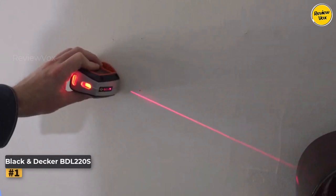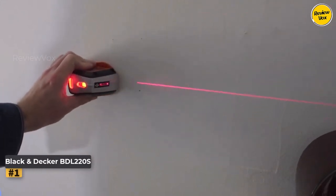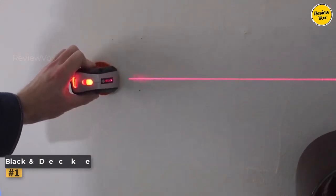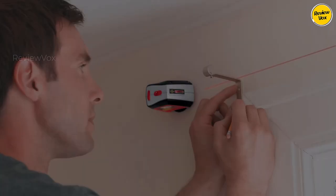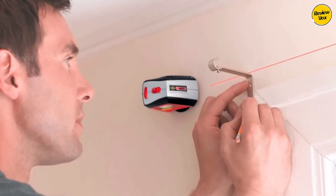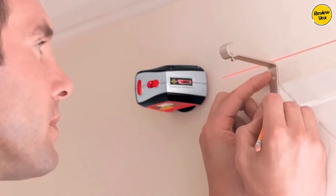Black & Decker BDL-220S. The laser level in question is a handy tool for various DIY tasks, particularly those involving a single laser beam such as hanging pictures, mirrors, curtain rails, and other decor items.